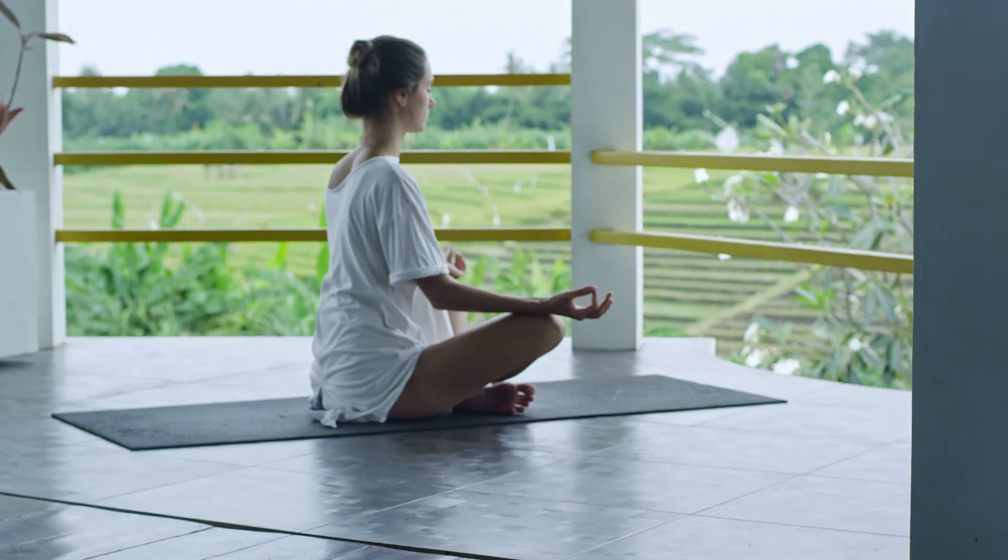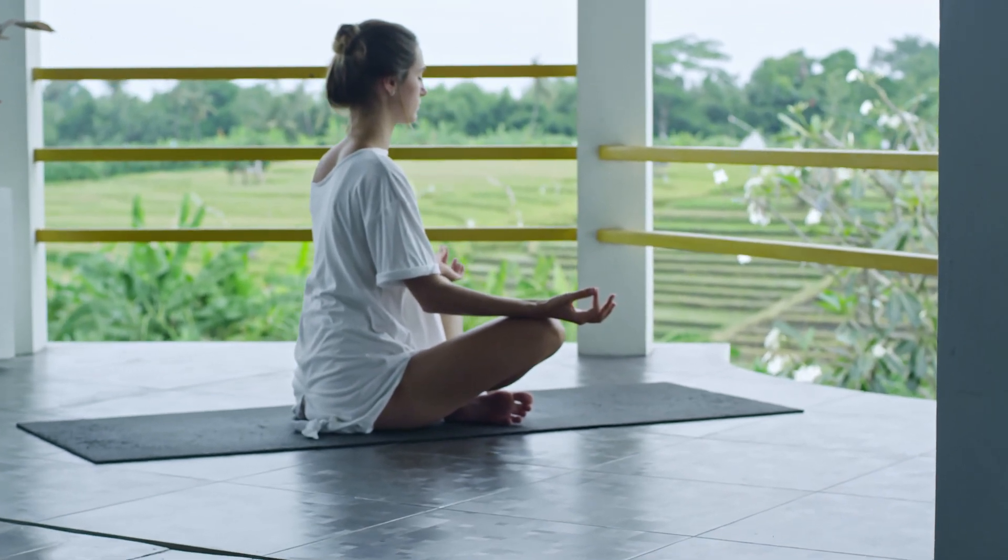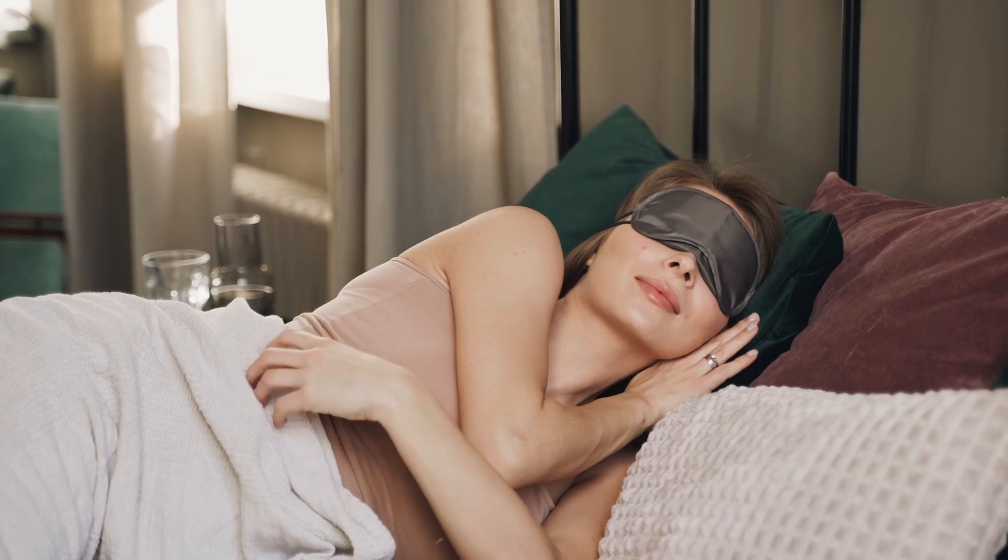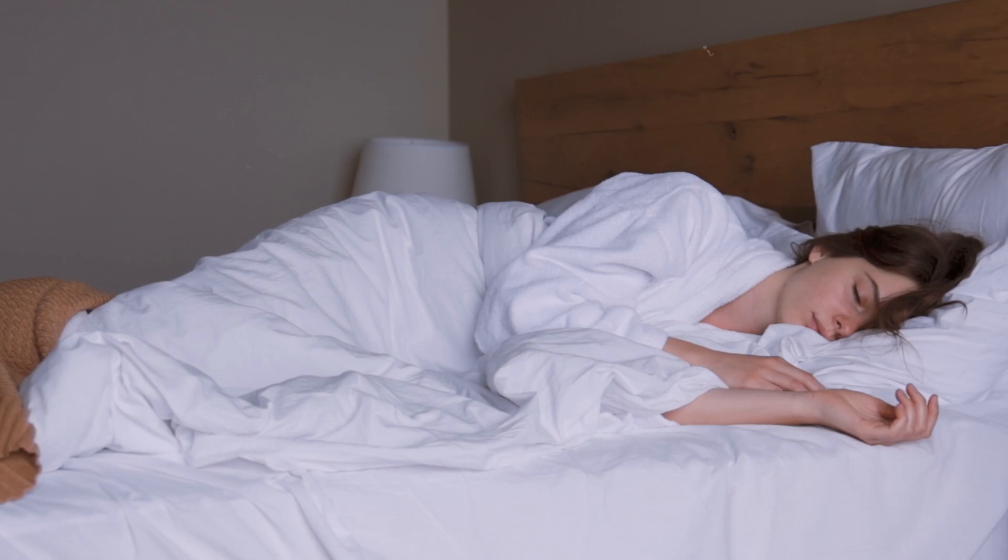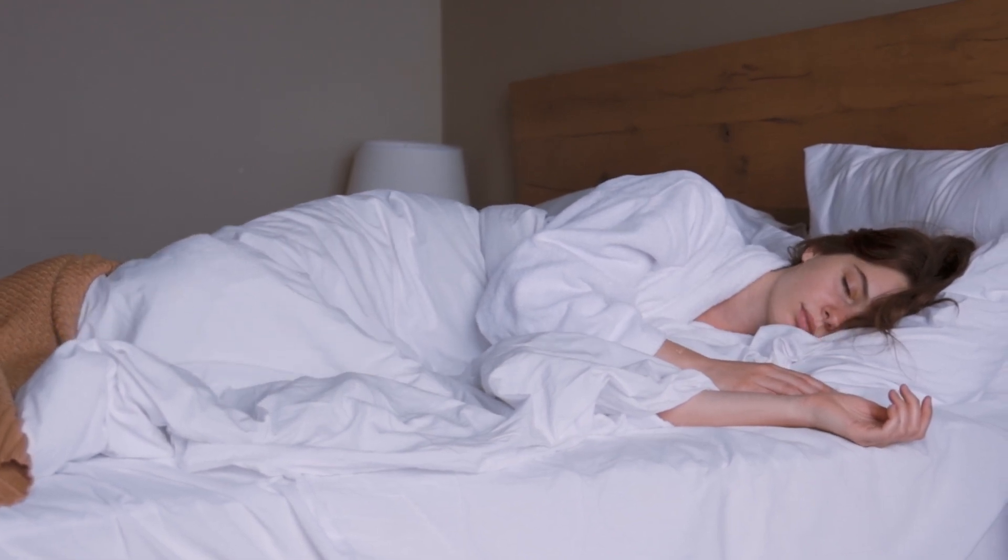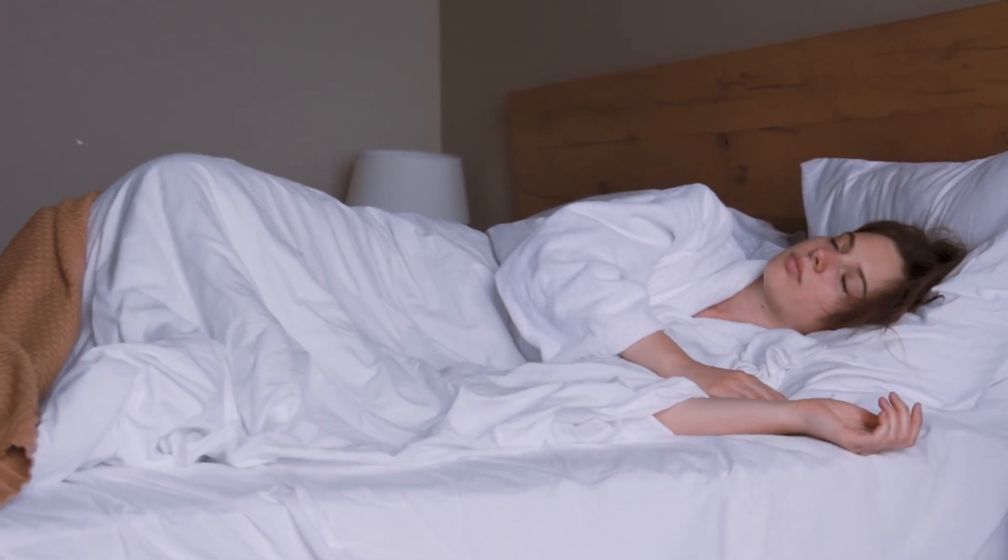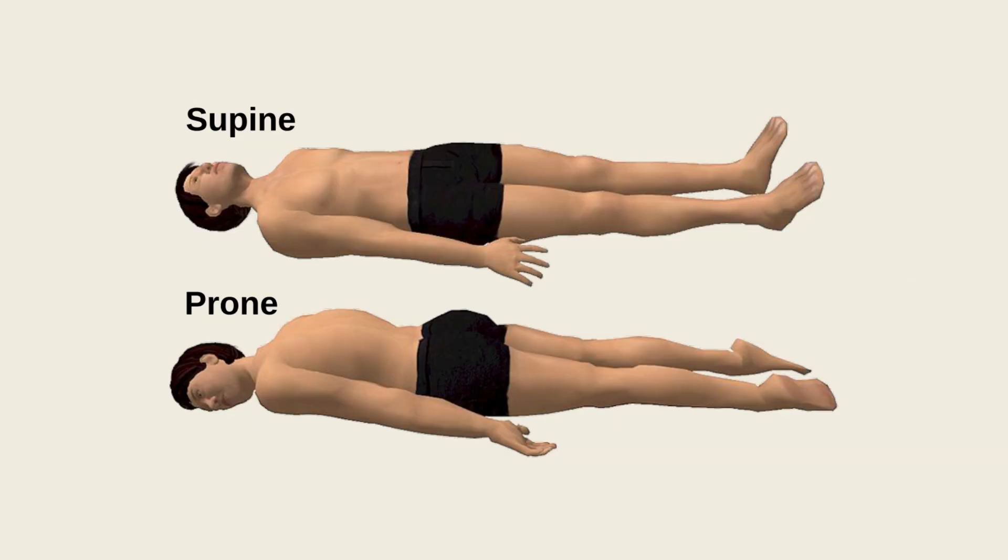Incorporate relaxation techniques, meditation, gentle yoga, or a warm bath to ease the transition into slow-wave sleep. Embrace side sleeping. Studies in rodents demonstrate that lateral sleep positions improve glymphatic clearance by up to 50% compared to supine or prone.